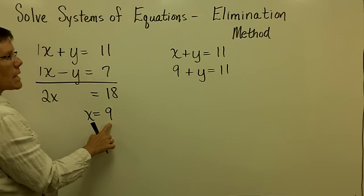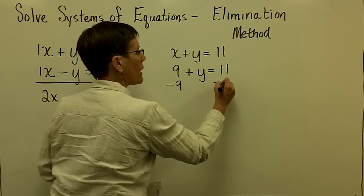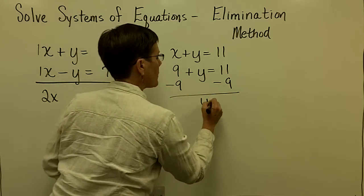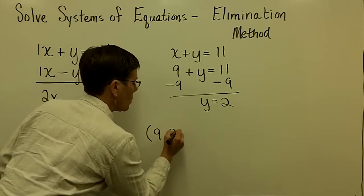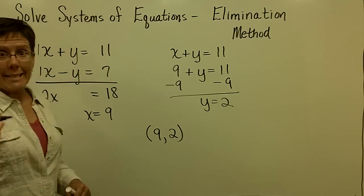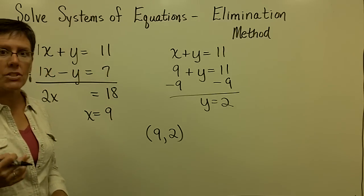We found out x was equal to 9. So I'm putting in the 9 and I'm going to subtract 9 from both sides and find out that y is equal to 2. So again, my solution set is x is 9, y is 2. Take that back into the original set of equations and make sure it checks.